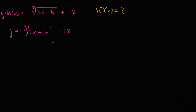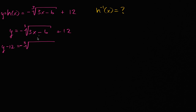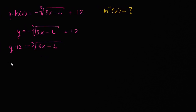The first thing we might want to do is isolate this cube root on the right-hand side. So let's subtract 12 from both sides, and we would get y minus 12 is equal to the negative cube root of three x minus six — don't want to lose track of that negative. We subtracted 12 from both sides, so that 12 is now gone.